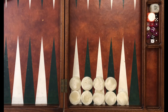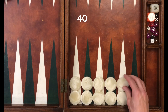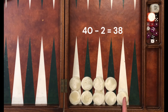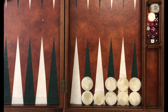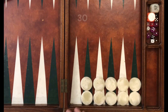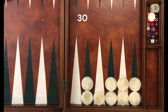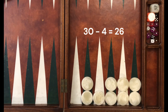Next example: nine checkers. Here's our known formation — 40, missing 2 is 38. Next example: here's the formation we are familiar with, our missing checker — 30, missing 4 is 26.